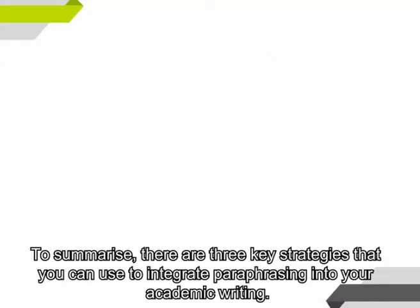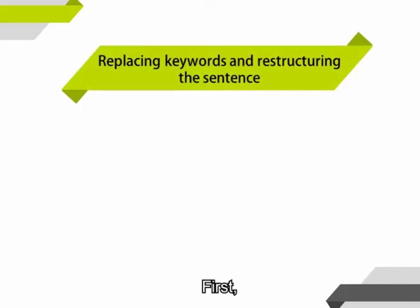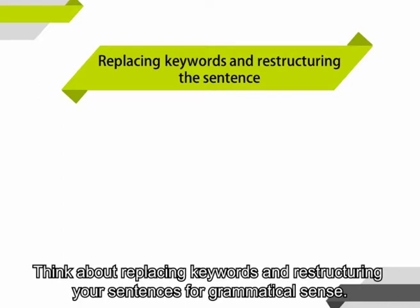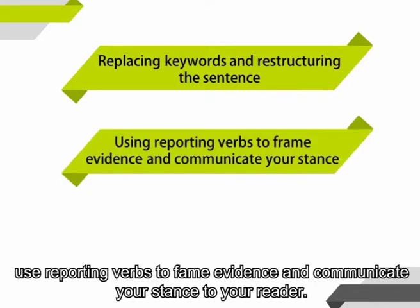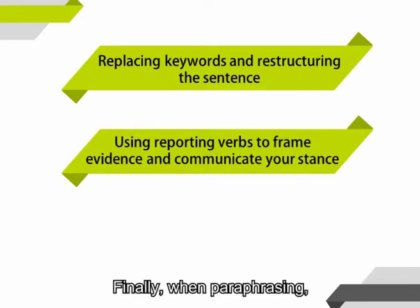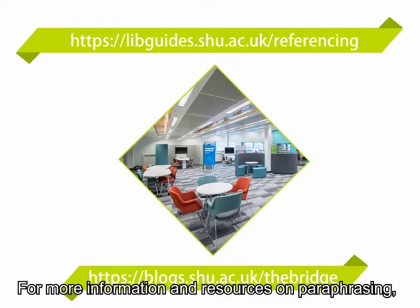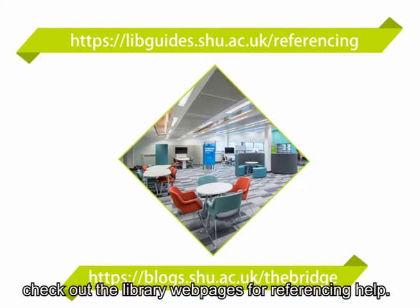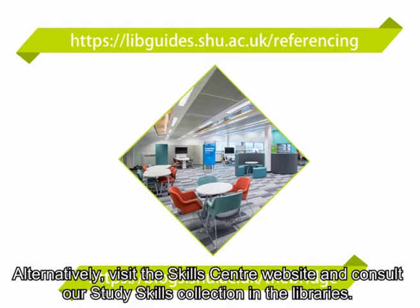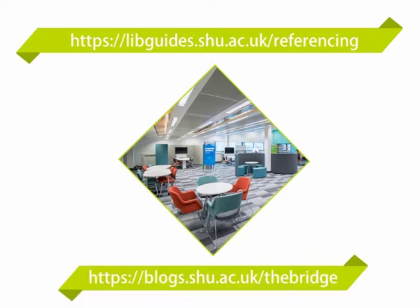To summarise, there are three key strategies that you can use to integrate paraphrasing into your academic writing. First, think about replacing key words and restructuring your sentences for grammatical sense. Next, use reporting verbs to frame evidence and communicate your stance to the reader. Finally, when paraphrasing, try to group evidence into clusters so that you can discuss multiple references at the same time. For more information and resources on paraphrasing, check out the library web pages for referencing help. Alternatively, visit the Skills Centre website and consult our study skills collection in the libraries. Thank you.